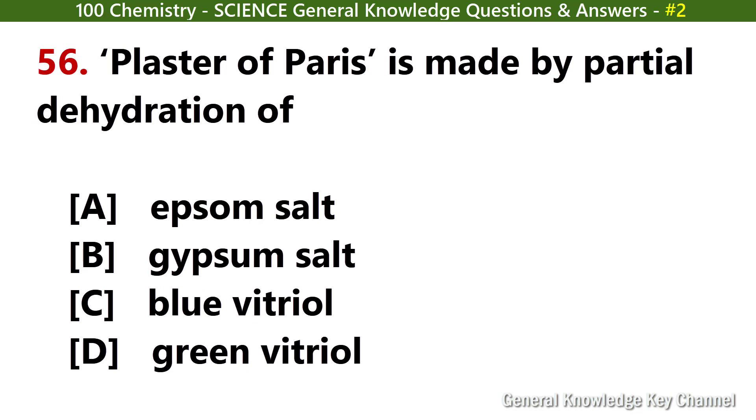Plaster of Paris is made by partial dehydration of? Answer B: Gypsum salt.